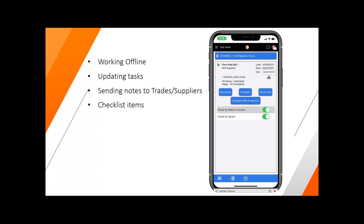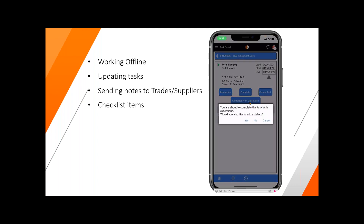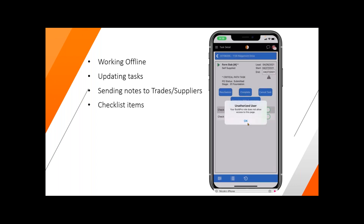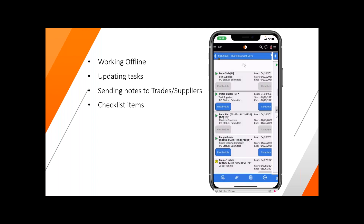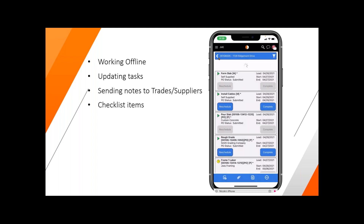So today, let's just complete this with exception. You're about to complete the task with exception — are you sure you'd like to do this? We're going to say yes. Apparently I'm not authorized to do that, so we will just complete this task today and go back to the main page. It lets you know at all times if you do or do not have permission to do these tasks. Most of the time, all of these tasks follow the same rules you have on your standard BuildPro schedules on the web version.